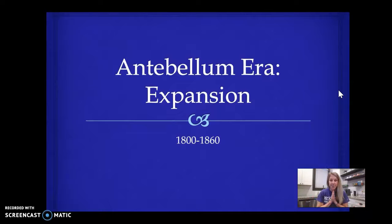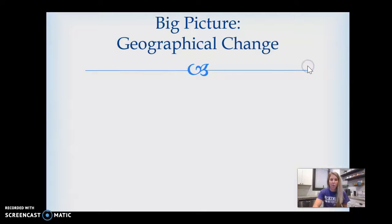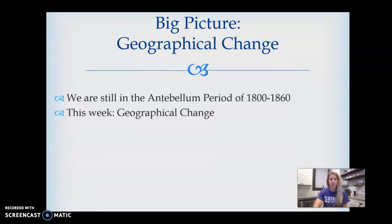Let me share my screen with you. What we're going to be doing this week is really important for understanding the coming of the Civil War, and this is all still happening in the antebellum period. Last week we looked at social change with men, women, gender, and immigration. This week we're going to look at geographical expansion and Manifest Destiny.